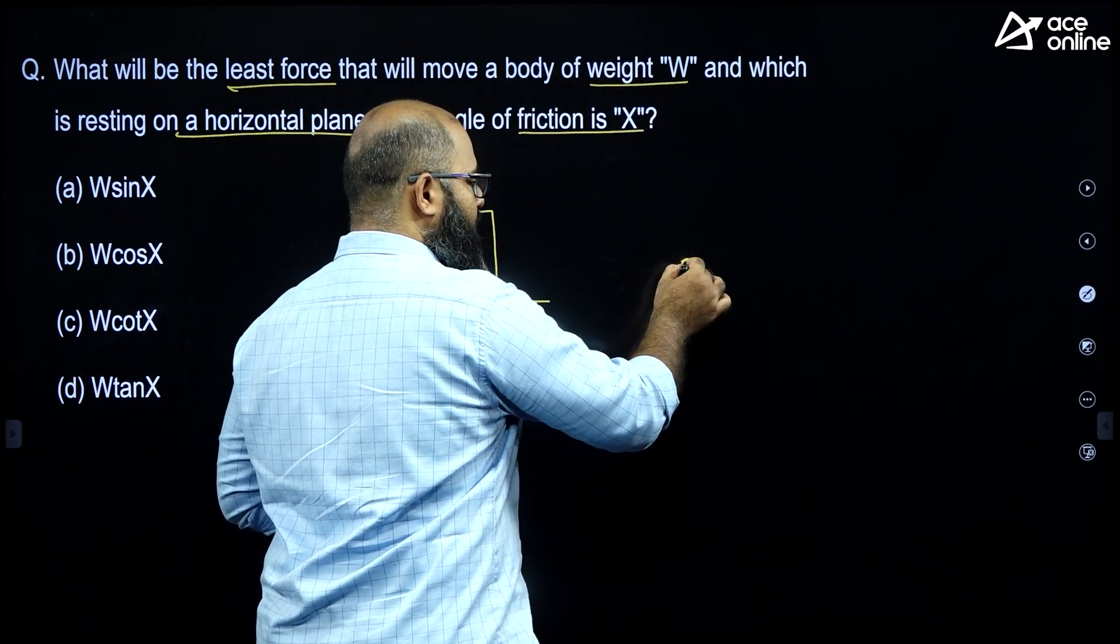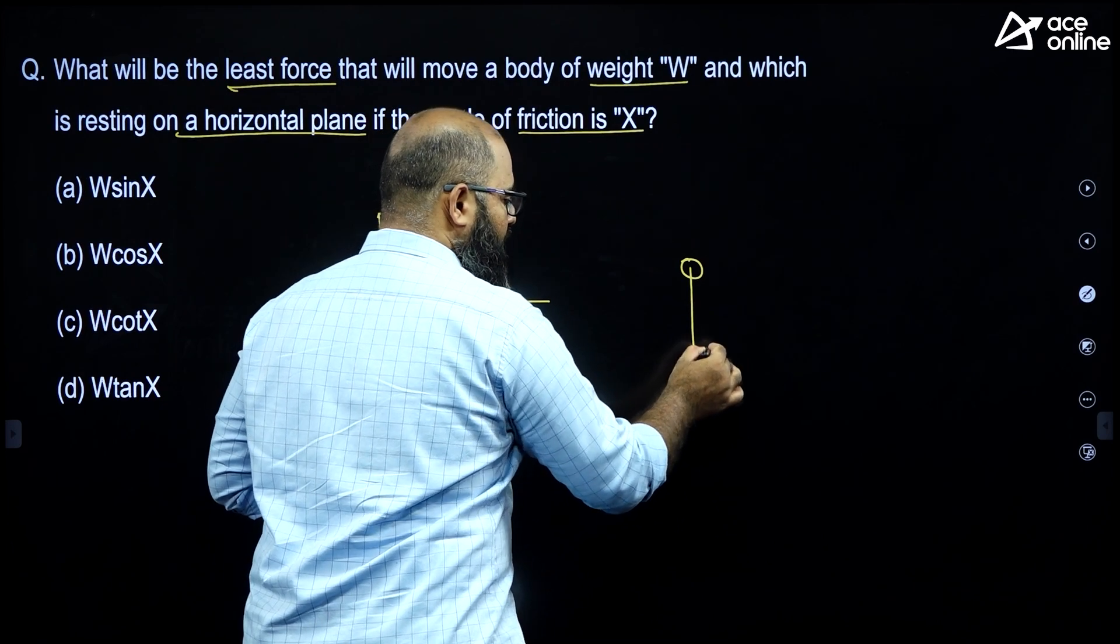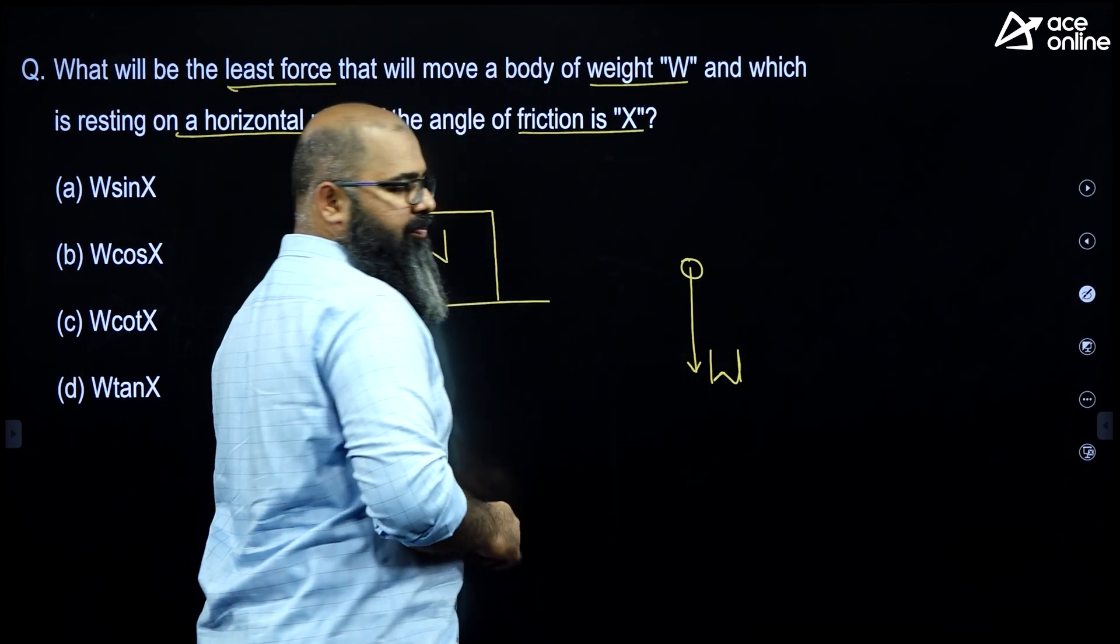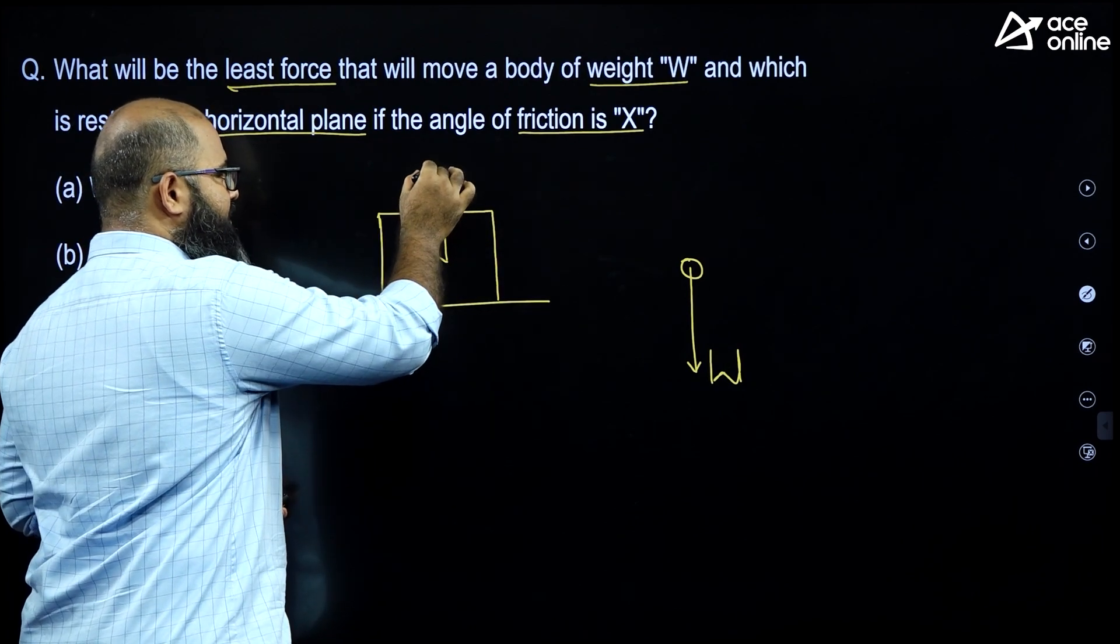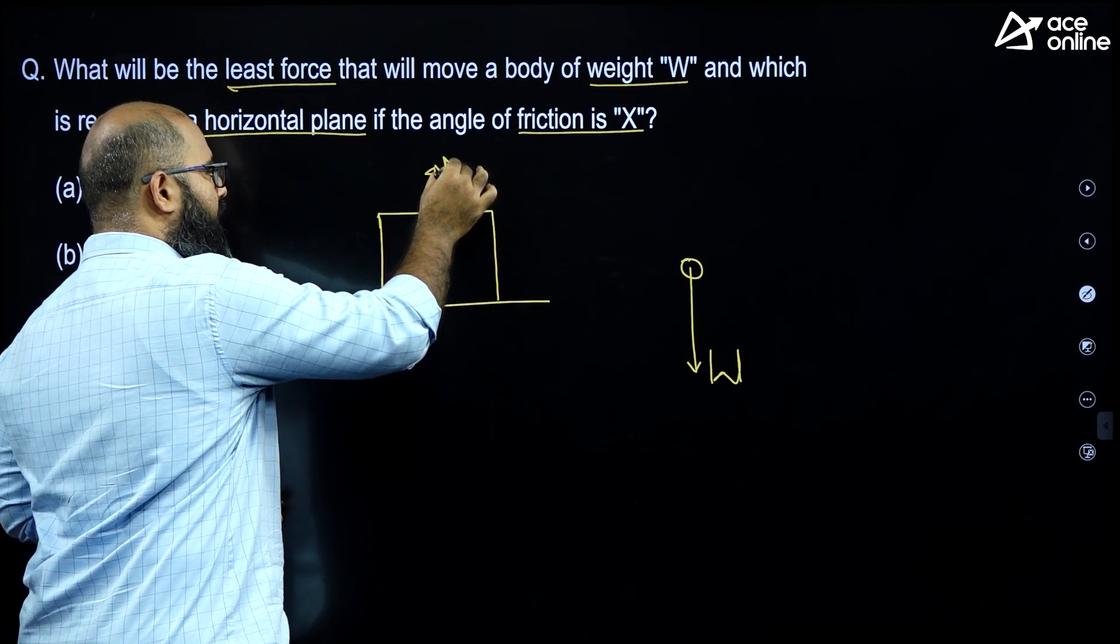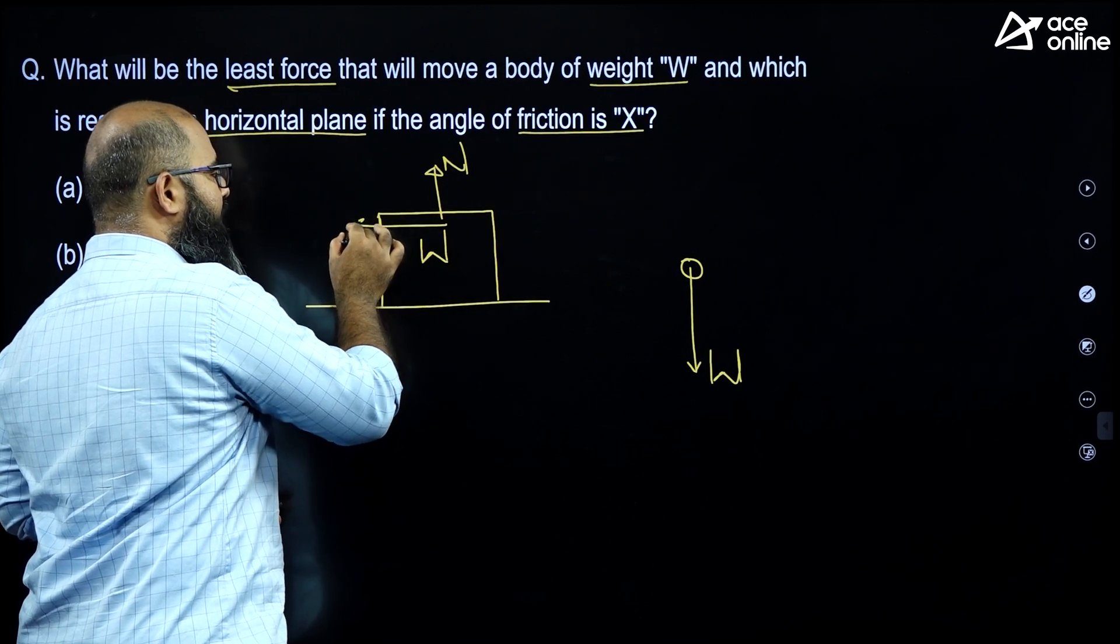Suppose, since the body is a particle for us, we can consider something like this. The force W is coming down. Now, if I am pulling it towards the right, I realize that normal will come up and the limiting friction will come in the left hand side direction.